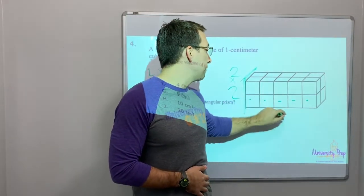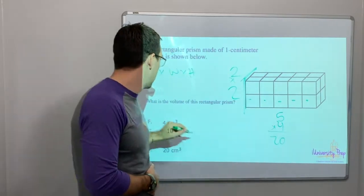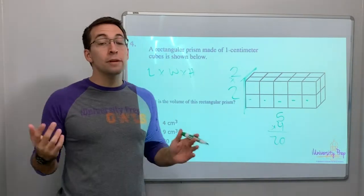And then how wide? One, two, three, four, five. Two times two is four. Four times five is twenty. Twenty cubic centimeters.